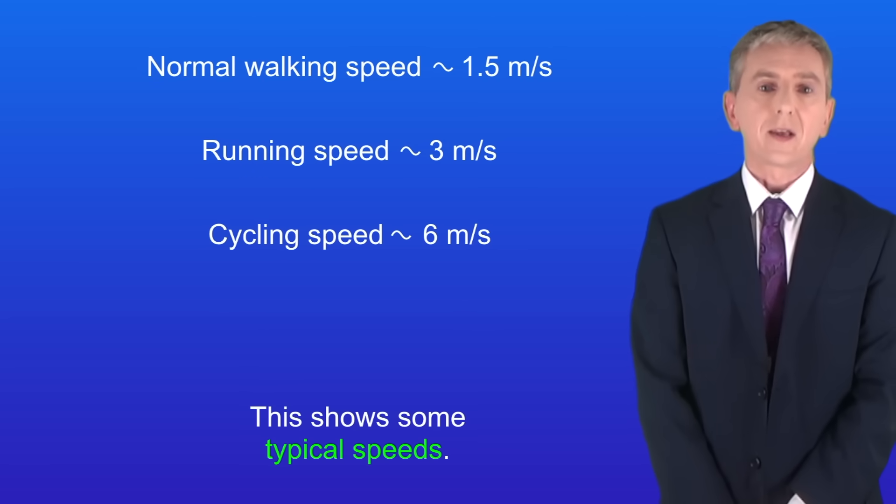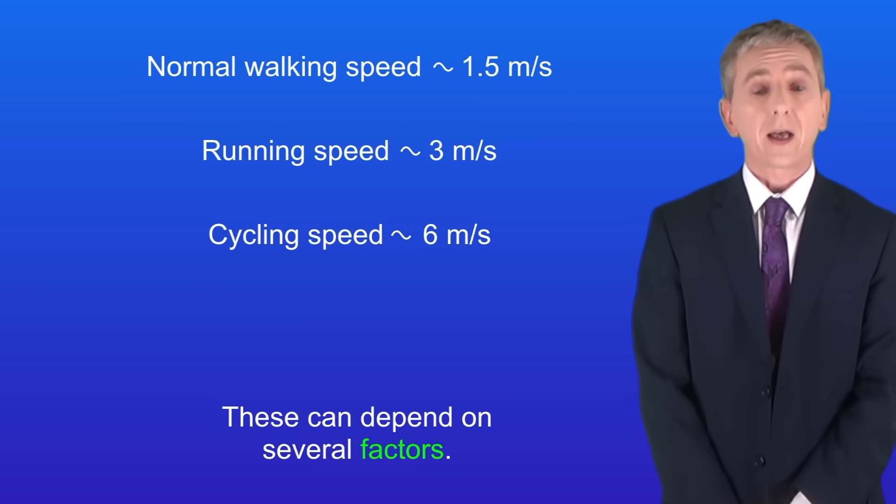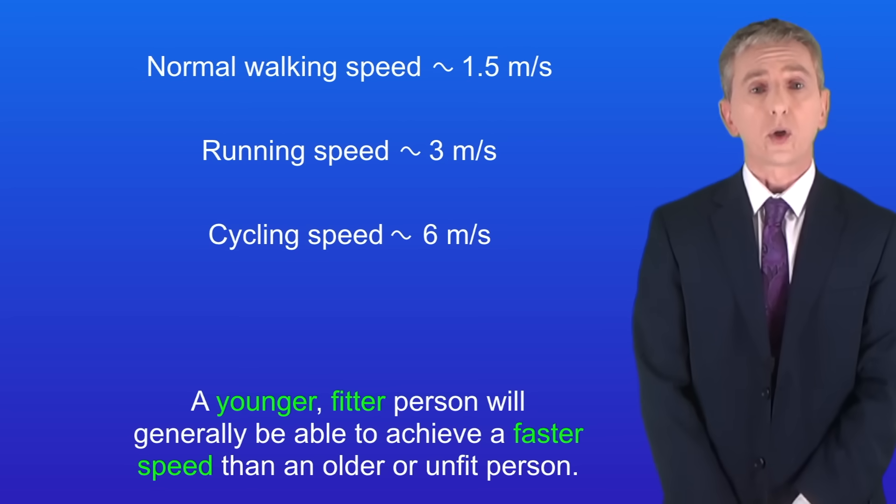Okay, now I'm showing you some typical speeds here and you could be asked these in your exam so you do need to learn them. Normal walking speed is around 1.5 meters per second. Running speed is around 3 meters per second and the speed of cycling is around 6 meters per second. Now I should point out that these can depend on several factors. For example, a younger fitter person will generally be able to achieve a faster speed than an older or unfit person.